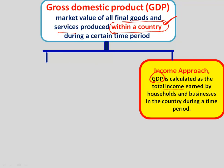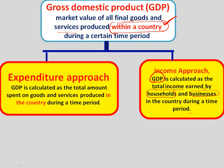There are two approaches to calculate GDP. The first is the income approach: GDP is calculated as the total income earned by households and businesses in the country during a time period. From a broad perspective, the total income earned by all salaried employees and all businesses collectively is what the economy has produced during a year. The second is the expenditure approach: the total amount spent on goods and services during a period is again your GDP.